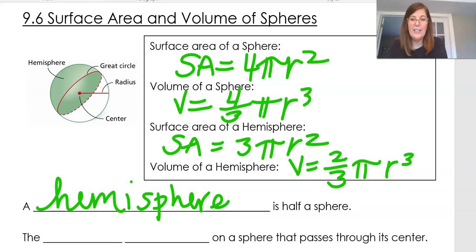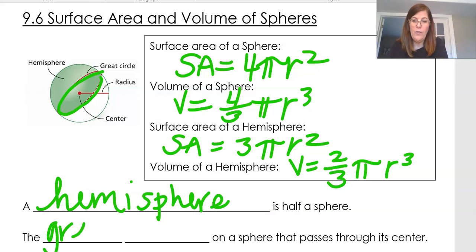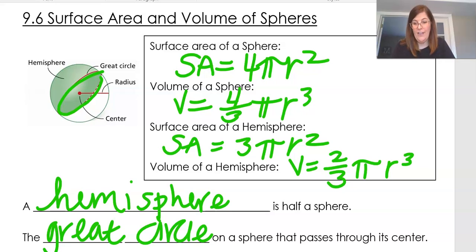This whole thing is a sphere; this half of it is a hemisphere. There is a circle that goes around the center of the sphere, and that is called the great circle. A great circle on a sphere is one that passes around the outside of the center of it.